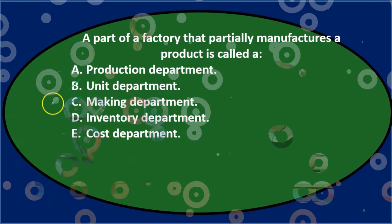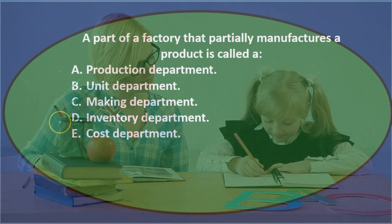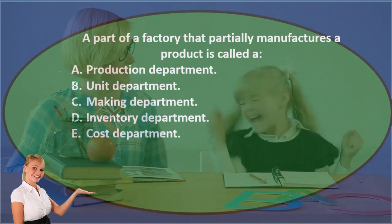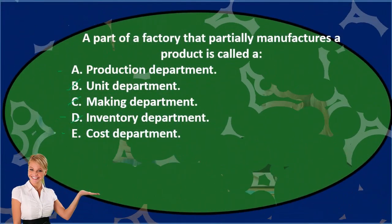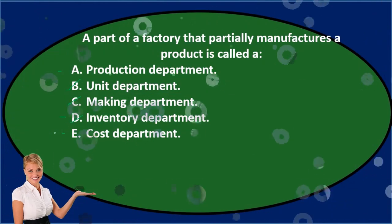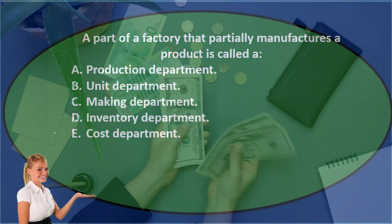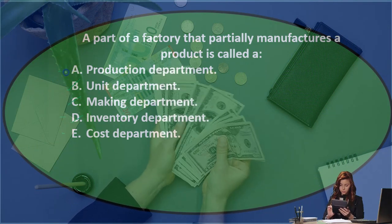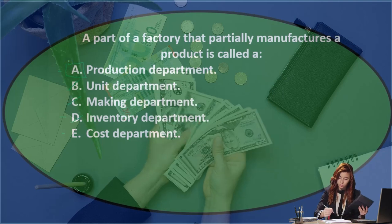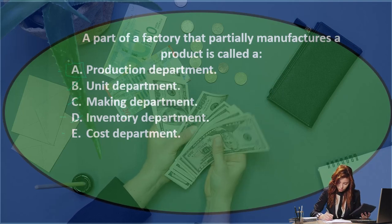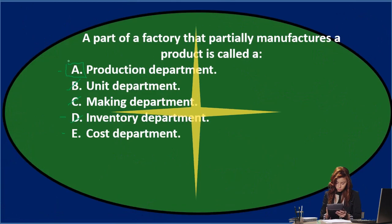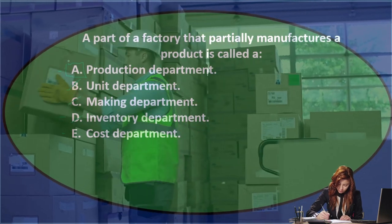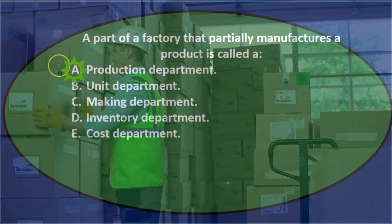Between production department and cost department: a cost department is often associated with budgeting and cost allocation, whereas a production department is what we're talking about in process costing — breaking the system into departments that produce partially completed items. So the answer is A, a production department.